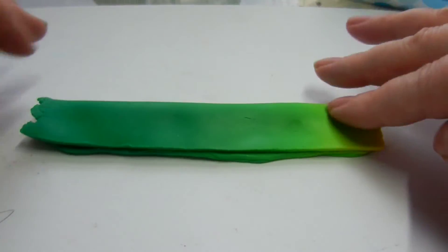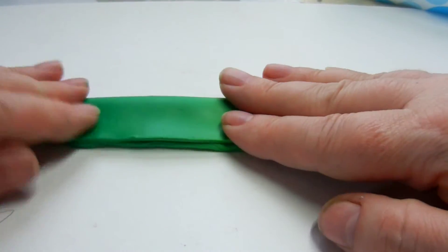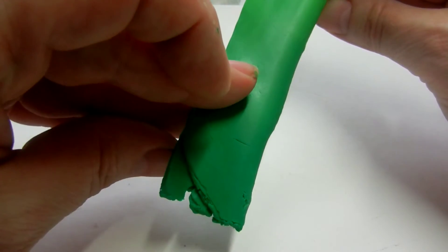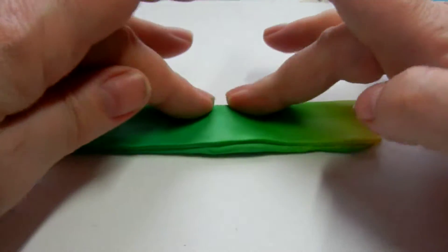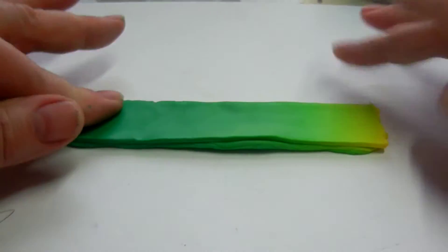So right now this has been blended on a one setting, my first setting on my pasta machine, and I'm going to put it together just like this. And granted, I didn't get that edge quite together, but you know, it really doesn't matter.